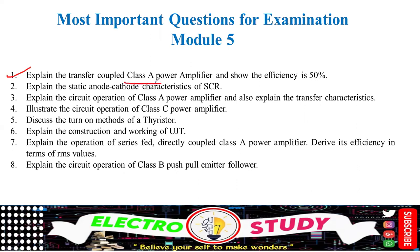Moving on to the discussion: first, explain the transformer-coupled Class A amplifier and show the efficiency — you need to prove that the efficiency of a Class A amplifier is only 50%. The second question is to explain the SCR characteristics, covering the three modes of operation: reverse biased condition and forward biased condition.